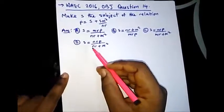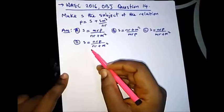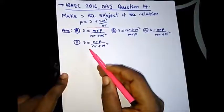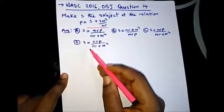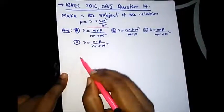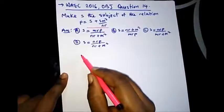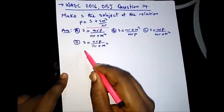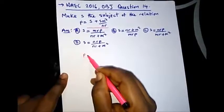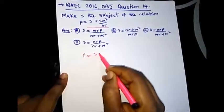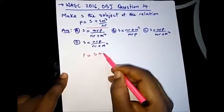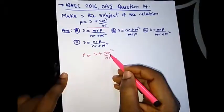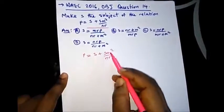It says: make S the subject of the relation P is equal to S plus SM squared over NR. Remembering the earlier video on introduction to the topic, let's write this down again. P is equal to S plus SM squared over NR. Our major goal is to take every value of S to the left hand side of the equation and every other value to the right hand side.